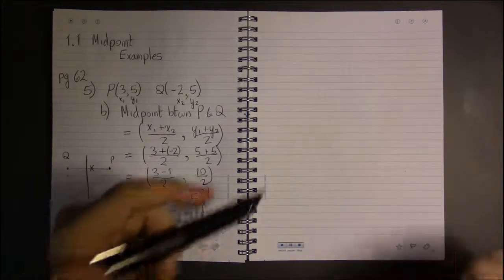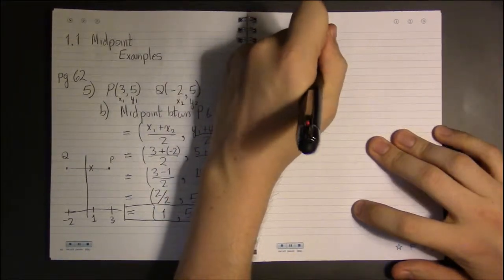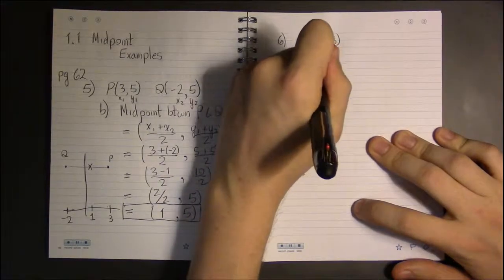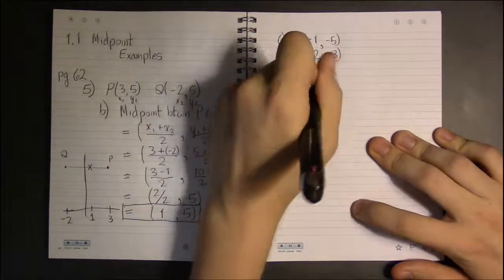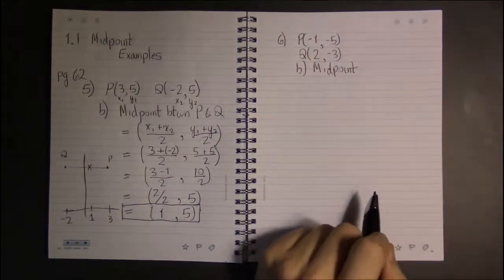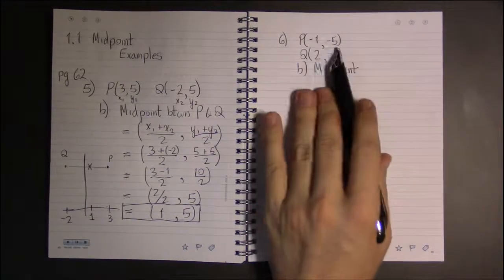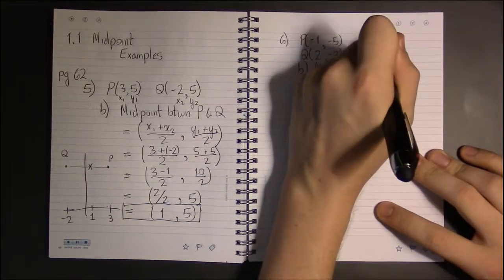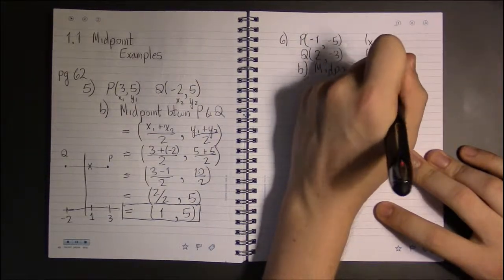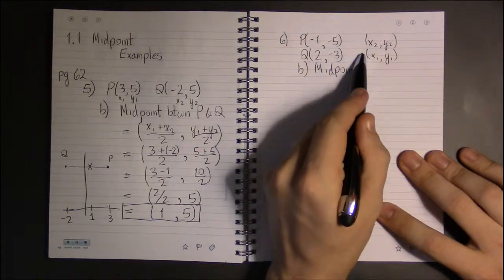Now, if I look at 6, in this case P was (-1,-5) and Q was (2,-3). And we'll do part B again to find the midpoint. So we'll switch it up, because P could be x1, y1, or it could be x2, y2. Doesn't matter. If we happen to choose x2, y2 this time, that means Q gets to be the x1, y1. So long as x1 and y1, x2 and y2, so long as they're kept together, doesn't matter what the order is.